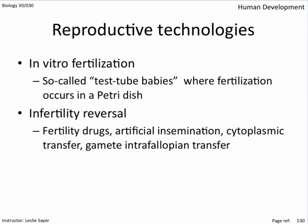Fertility drugs are offered to boost fertility. Couples are considered infertile if they've been trying to conceive for a year or more. Sperm may be collected artificially — perhaps from a donor — and placed in the vagina for hopes of normal fertilization. Cytoplasmic transfer involves the nucleus of an older woman's egg being transferred to the enucleated egg of a younger woman, whose cytoplasm offers an improved chance of successful fertilization and implantation. GIFT is like IVF but the artificial fertilization occurs in the oviduct, which improves the reliability of a viable outcome.